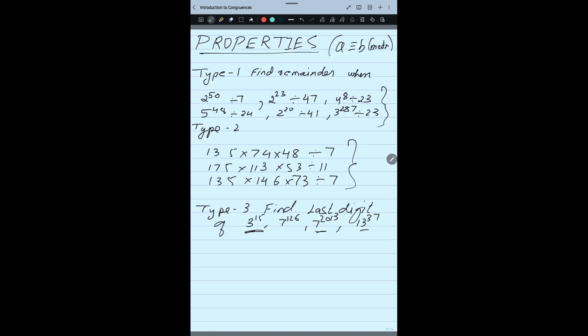Now let us discuss the properties of A congruent B modulo N. The first basic property is that A congruent B modulo N is an equivalence relation. You might have heard this name in functions and relations in grade 12. If I am saying it is an equivalence relation, it means first thing it is reflexive, second thing it is symmetric, and third it is transitive.